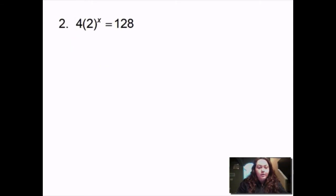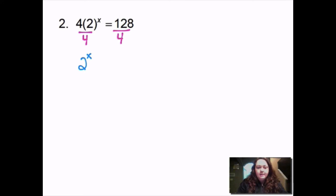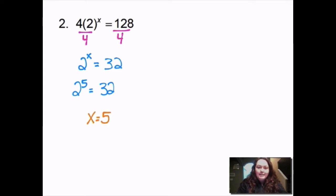This one I have 4 times 2 to the x equals 128. Before I can get to the exponent I have to get rid of that 4 that's being multiplied, so I'm going to divide by 4 on both sides. That gives me 2 to the x equals 32. Then I do 2 times 2 times 2 until I get to 32, which is 5 times — so 2 to the 5th equals 32, which means x equals 5.